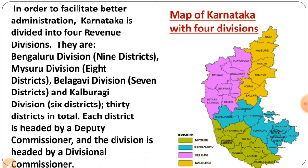In order to facilitate better administration, Karnataka has been divided into four revenue divisions. The reason our government divided the state into different regions is to make it very easy to run good administration in Karnataka. The four revenue divisions are: Bengaluru division, Mysore division, Belagavi division, and Kalaburagi division. Bengaluru division has nine districts, Mysore division has eight districts, Belagavi division has seven districts, and Kalaburagi division has six districts — making a total of 30 districts in Karnataka. Every district is headed by a Deputy Commissioner.